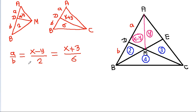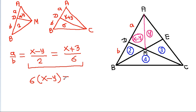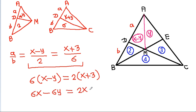From these two equations, if we cross multiply: 6 times (X minus Y) equals 2 times (X plus 3). That gives 6X minus 6Y equals 2X plus 6, and therefore 4X minus 6Y equals 6.